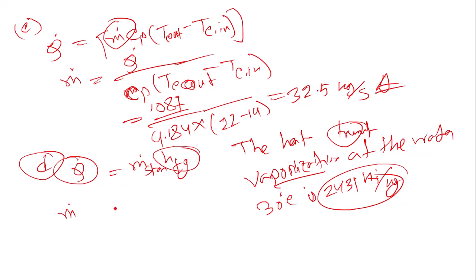Using this value, mass flow rate equals 1087 divided by 2431, giving us 0.45 kg per second for the steam condensation rate. This is the final answer.